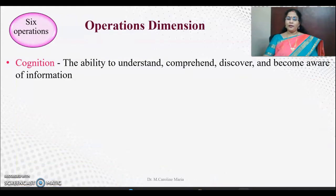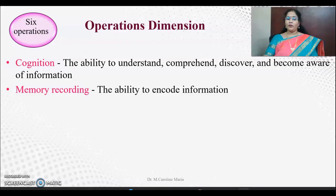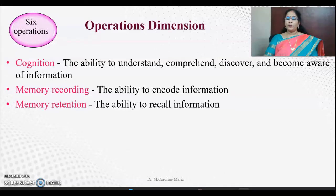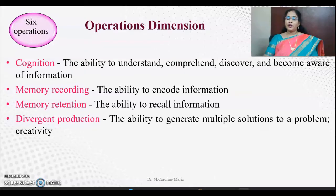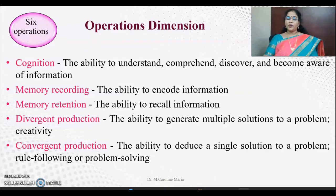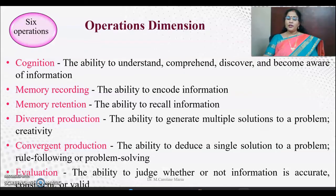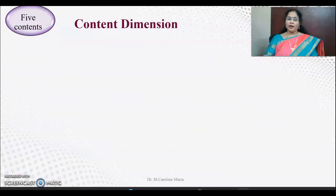Let's see one after the other. Cognition is the ability to understand, comprehend, discover and become aware of information. Memory recording is the ability to encode information with a proper label. Memory retention is the ability to recall information. Divergent production is the ability to generate multiple solutions for a single problem, which is otherwise called creativity. Convergent production is the ability to deduce a single solution to a problem. Evaluation is the ability to judge whether information is accurate, consistent, or valid.